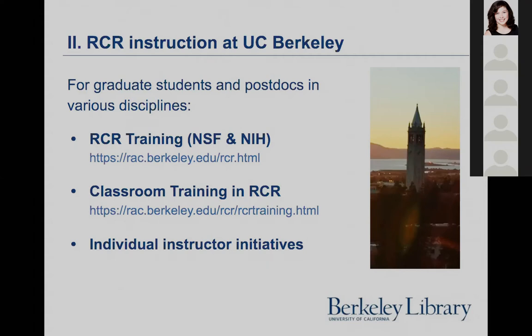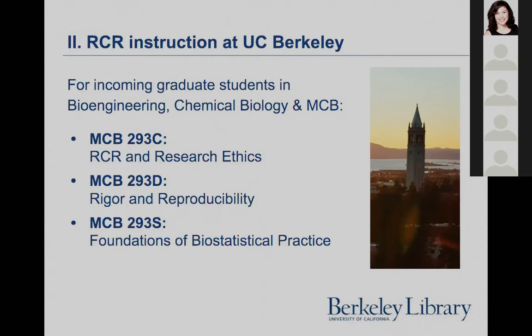This past fall, our group presented our data module for all three types of RCR instruction. For incoming students in the graduate programs in bioengineering, chemical biology, and molecular and cell biology, there's a required course, MCB 293. The course is currently given in three parts, each of which is five weeks long. Classes meet once a week for 90 minutes to two hours. The curriculum includes research ethics, reproducibility, and statistical validity.